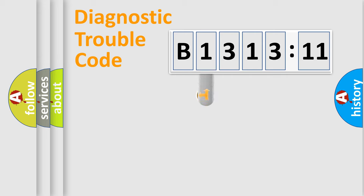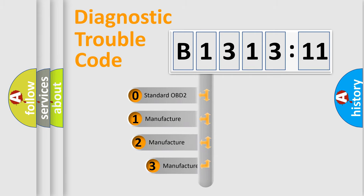Powertrain, body, chassis, network. This distribution is defined in the first character code.